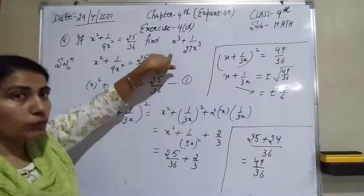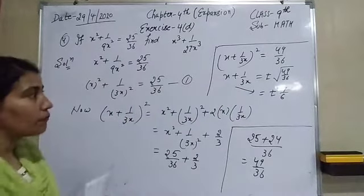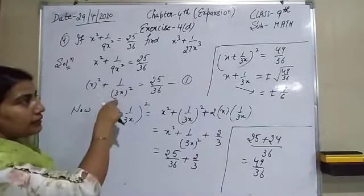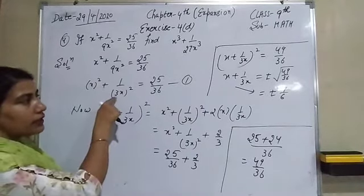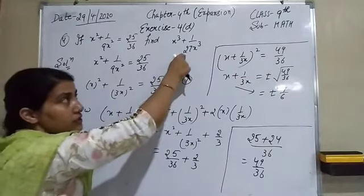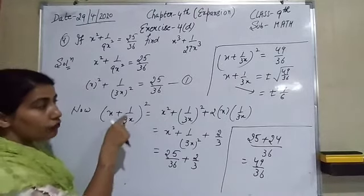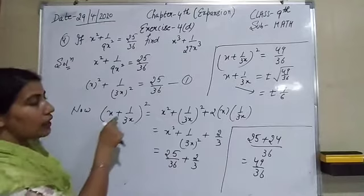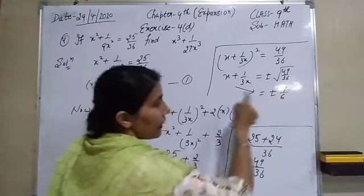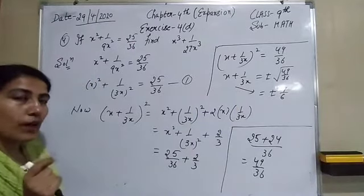Now we need to find x³ + 1/(27x³). We cube both sides of x + 1/(3x) = ±7/6. When you cube this expression, you will get x³ + 1/(27x³) directly. Note that 9 is the square of 3, so 1/(9x²) = 1/(3x)², and 27 = 3³, connecting the squared and cubed forms. So cubing both sides gives the required answer for x³ + 1/(27x³).